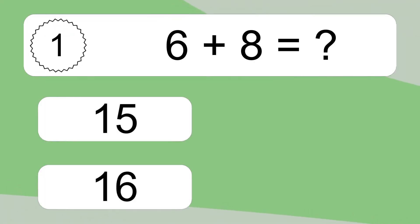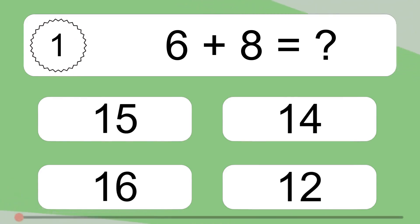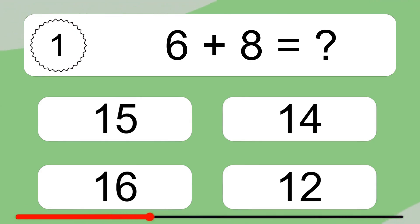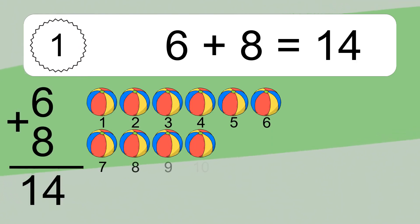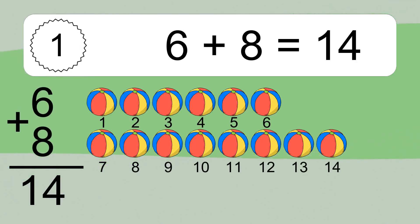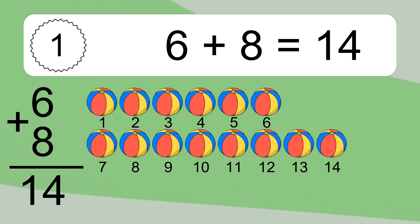6 plus 8 equals what? 6 plus 8 equals 14. Let's count it: 1, 2, 3, 4, 5, 6, 7, 8, 9, 10, 11, 12, 13, 14.